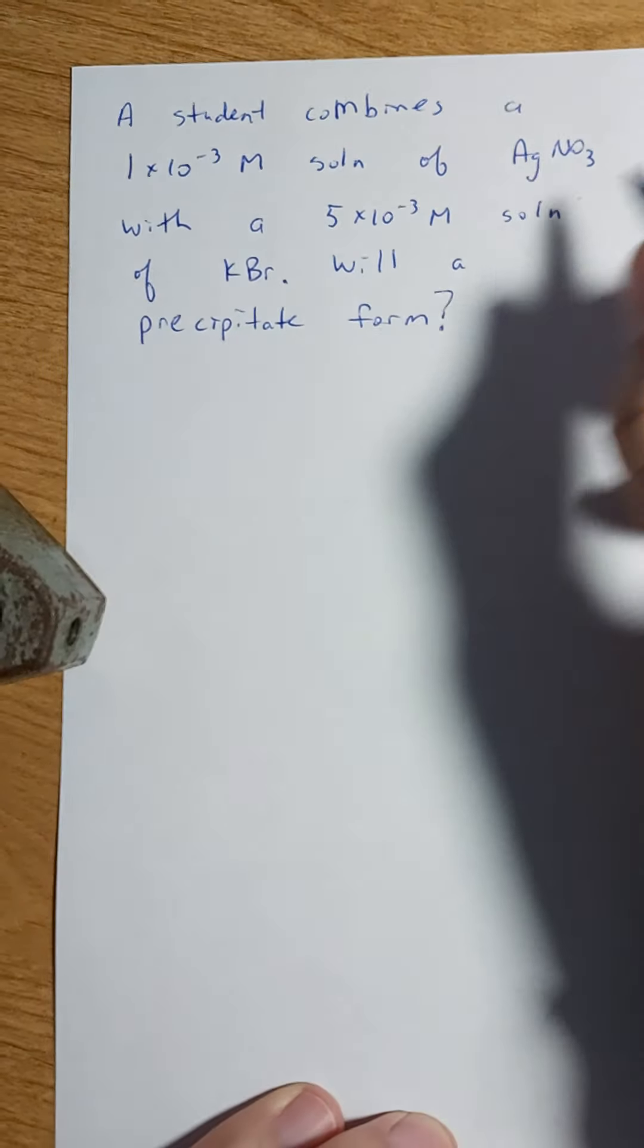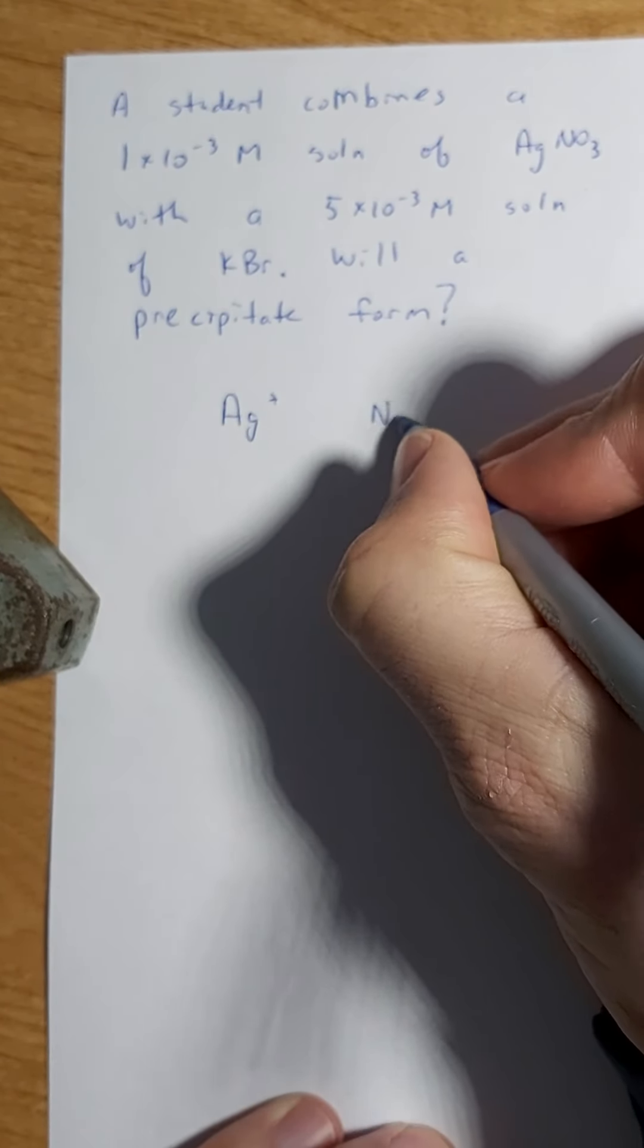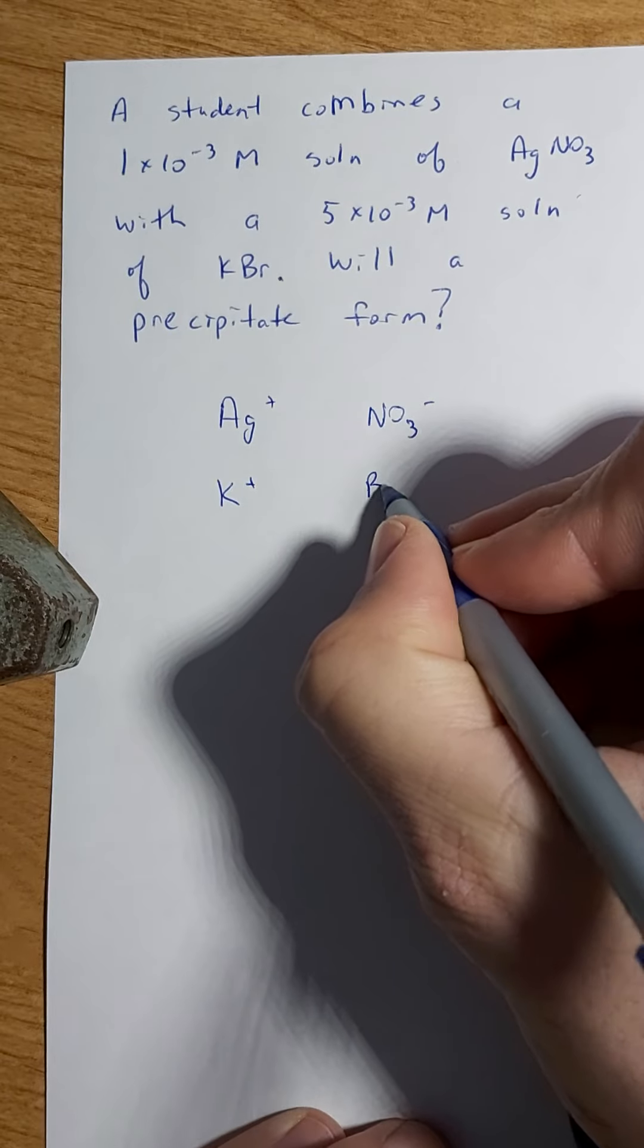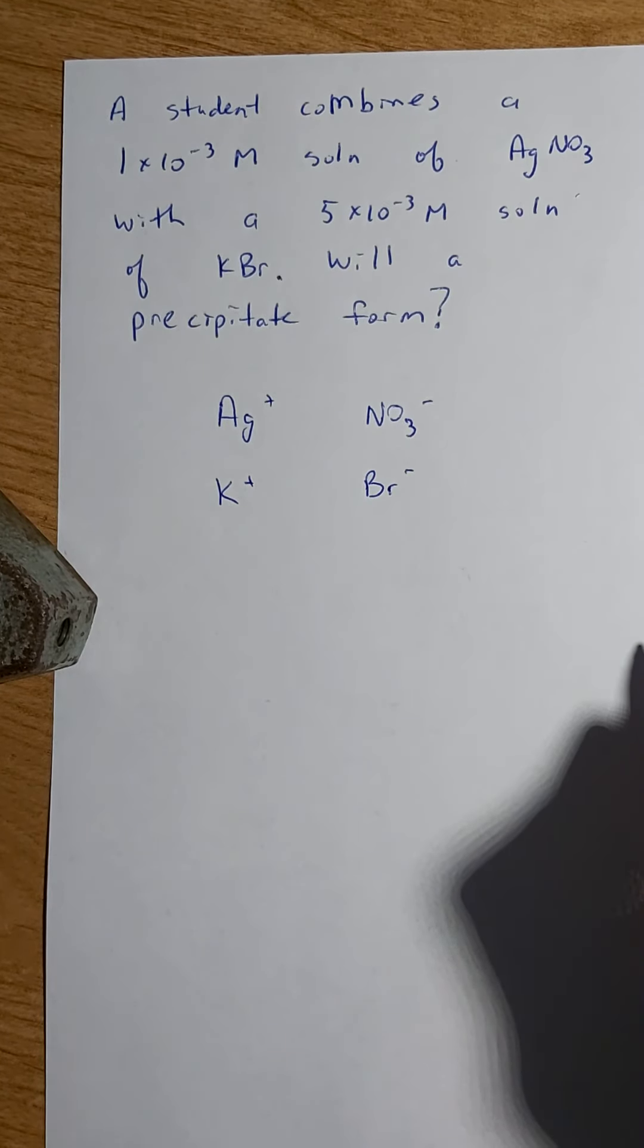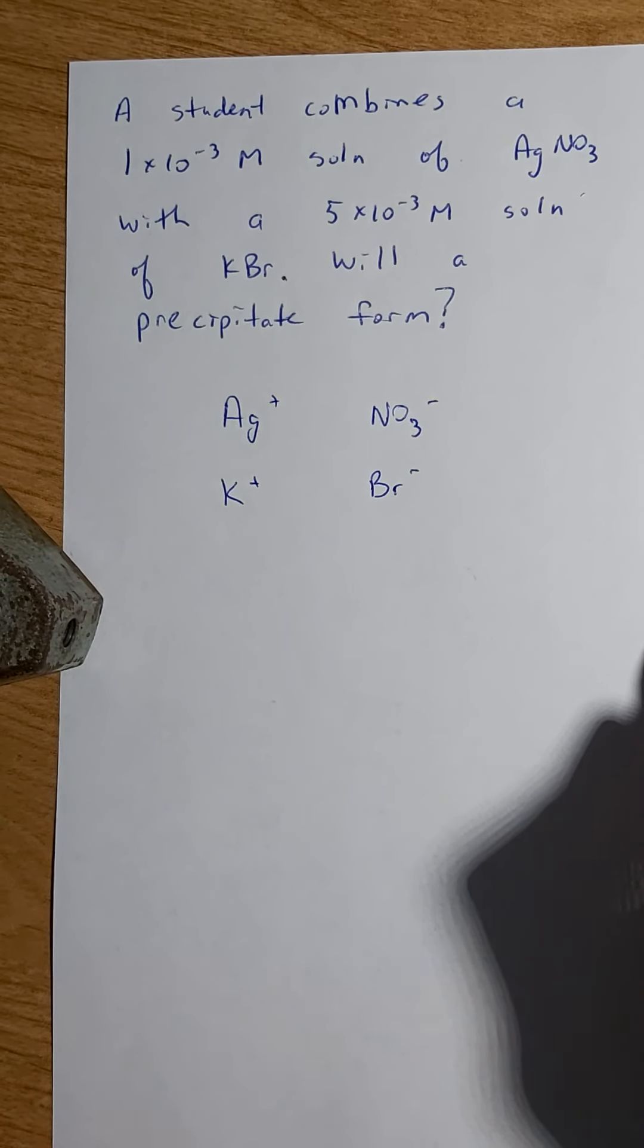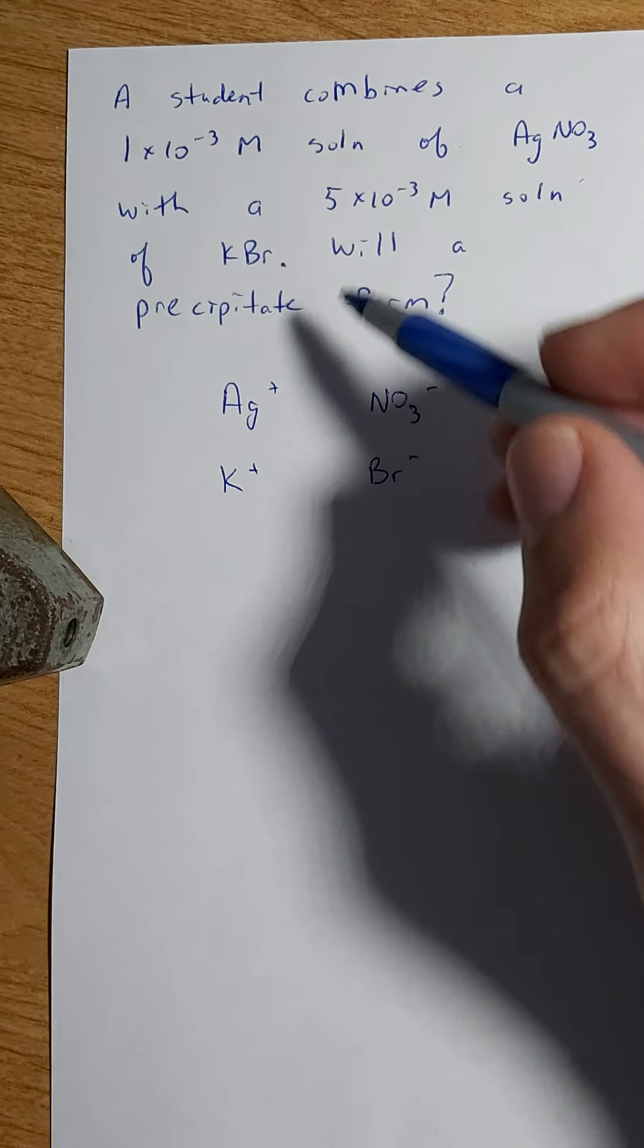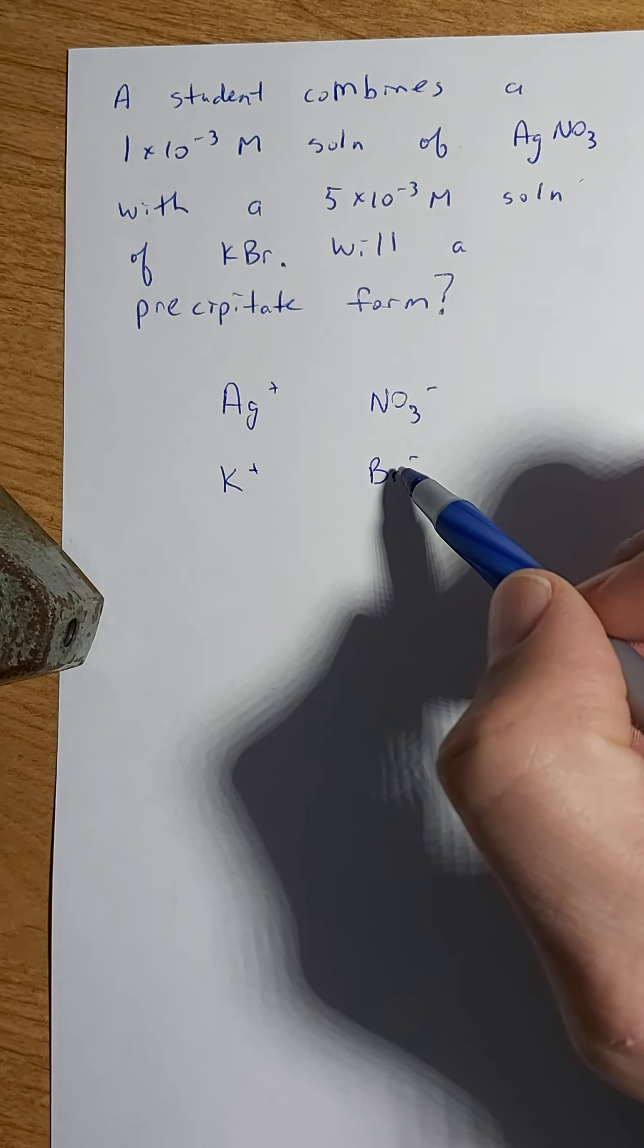So first of all, let's look at what AgNO3 is going to give me. It's going to give me Ag+ ions and NO3- ions. And KBr is going to give me K+ ions and Br- ions. So that's what I have in my beaker right now. This is not going to join up with that again.